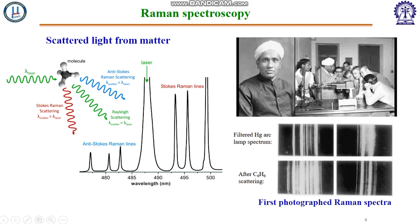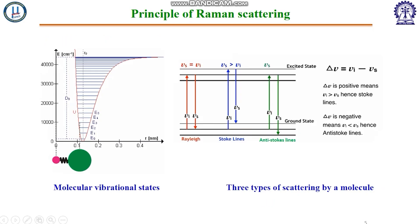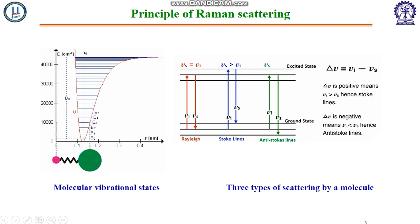In a typical Raman spectrum, the most intense peak is the Rayleigh peak. To the right of the Rayleigh peak there are peaks called Stokes lines, and to the left there are peaks called anti-Stokes lines. The origin of these peaks depends on molecular vibration — a periodic motion of the atoms of a molecule relative to each other such that the center of mass of the molecule remains unchanged.